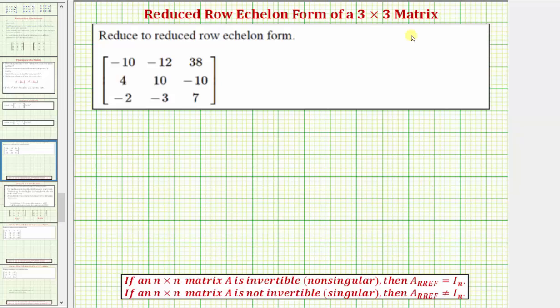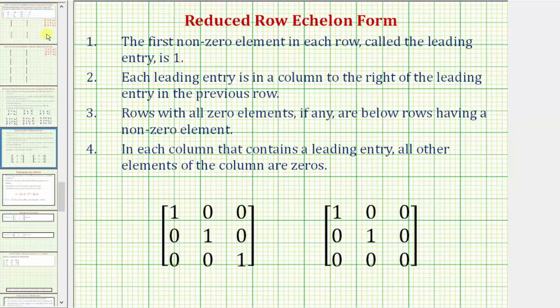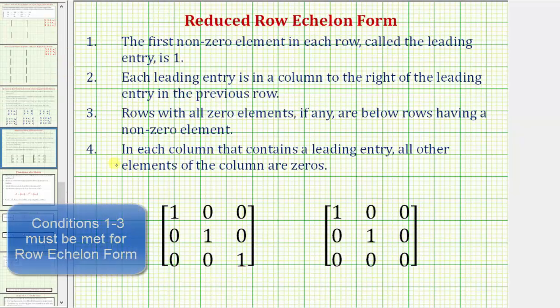We're given a three by three matrix and asked to write the matrix in reduced row echelon form. For a quick review, these four conditions must be met for a matrix to be in reduced row echelon form.